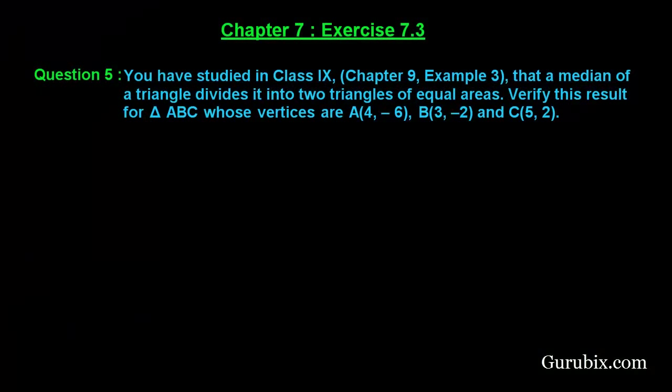Welcome friends. Let us solve question number 5 of exercise 7.3 of chapter 7. The question says: you have studied in class 9, chapter 9, example 3, that the median of a triangle divides it into two triangles of equal areas. Verify this result for triangle ABC whose vertices are A(4, -6), B(3, -2), and C(5, 2).